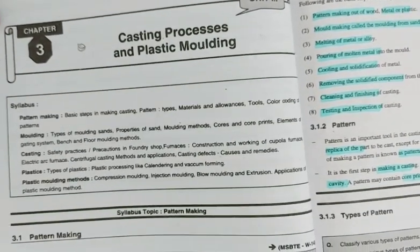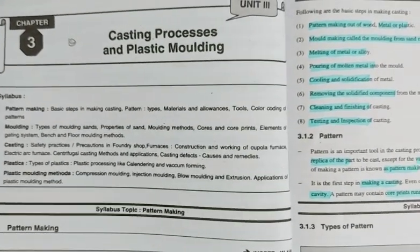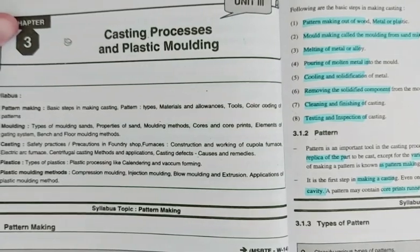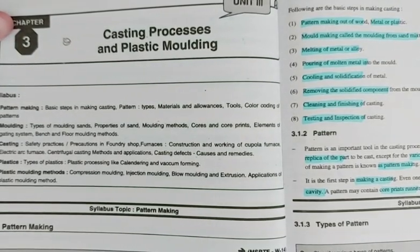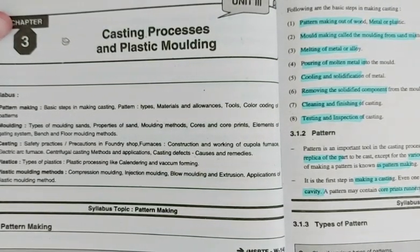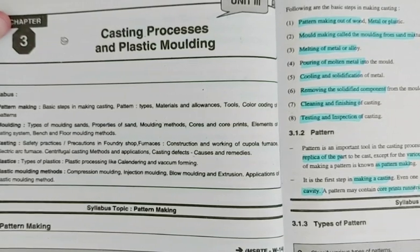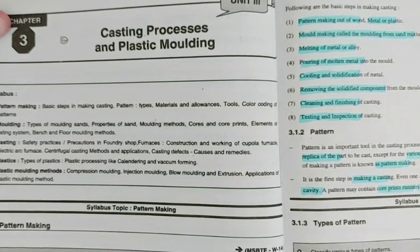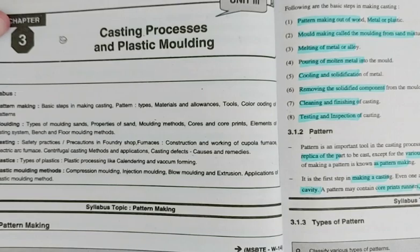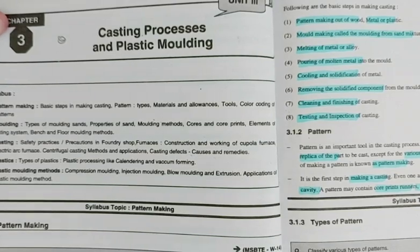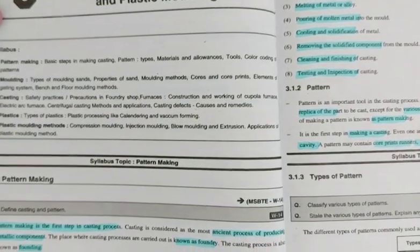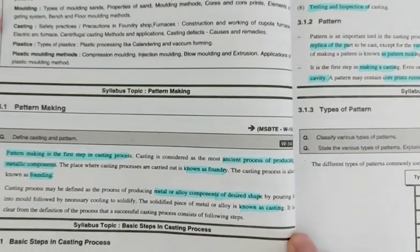This is the third chapter, casting processes and plastic moulding. Actually, casting processes are carried out in three steps: pattern making, moulding, and then casting. This topic will be divided into three steps. The first one is pattern making.